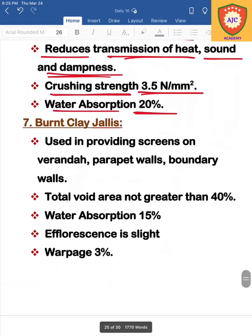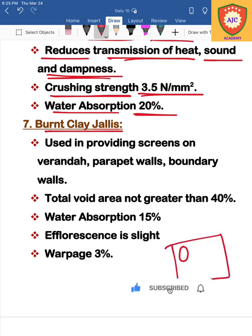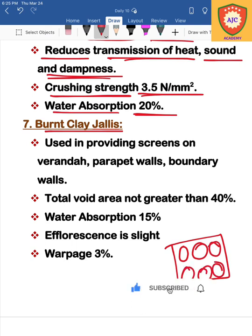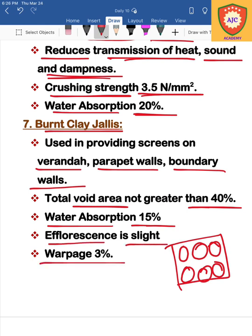The last type of brick is burnt clay jolly bricks. These are used in garden areas and decorative applications. Water absorption is 15%, efflorescence is slight, and warpage is 3%. These are the different types of burnt clay bricks.